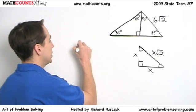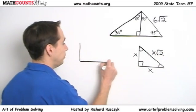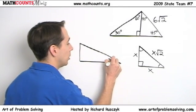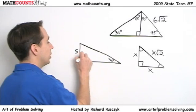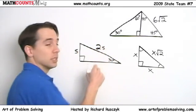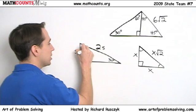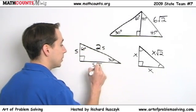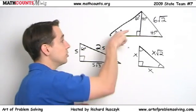And in a 30, 60, 90 triangle, if we take the side opposite the 30 degree angle and call that S, the hypotenuse then is twice S and the side opposite the 60 degree angle is S times the square root of 3. Alright, so now we'll take these facts and use them in this problem.